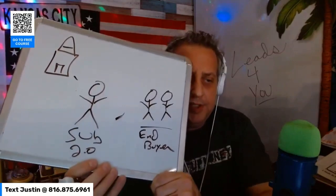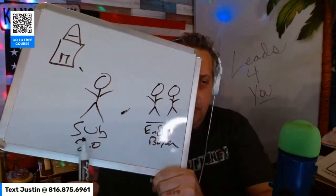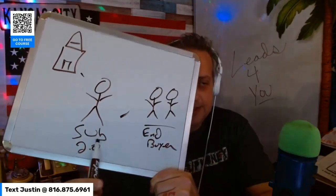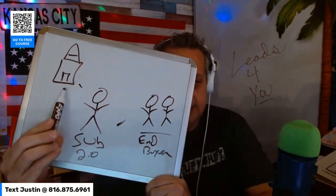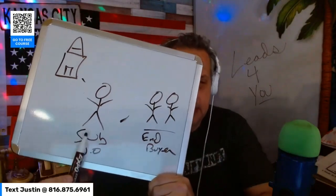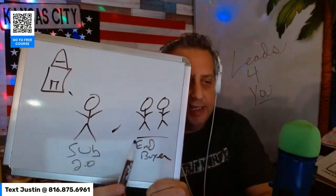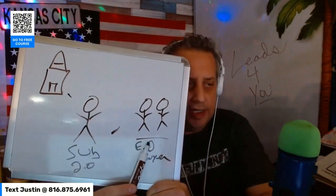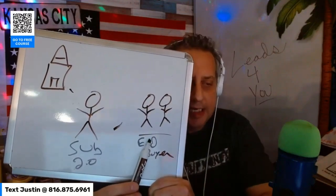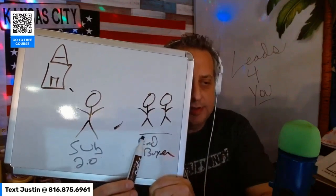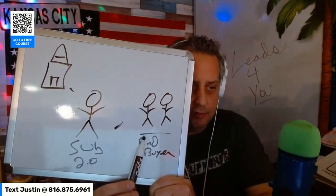If you're doing a subject-to wholesale deal, the wholesaler has a subject-to agreement with the seller. So he has it under contract. Before he transfers the deed, he finds an end buyer — either an investor buyer or a retail buyer — and he lines up an assignment to close at the title company, just like an ugly house wholesaler would.